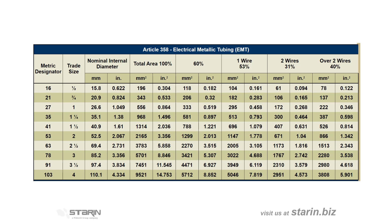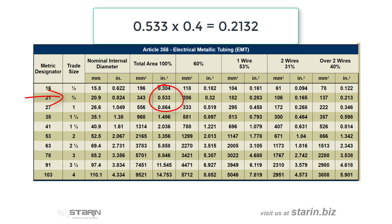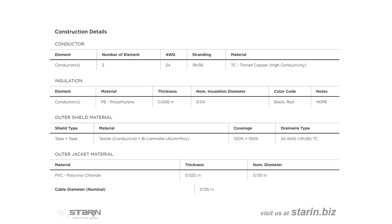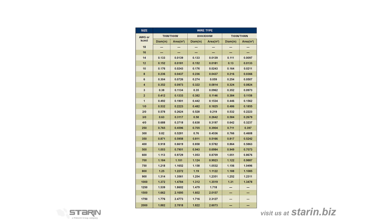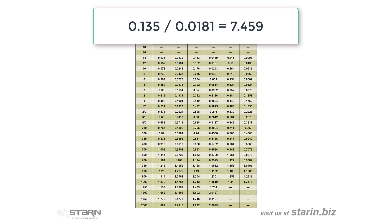Here's an example. In Table 4, we locate our ¾ inch EMT conduit. Under total area, we find 0.533 square inches. We multiply that number by 0.4 and get 0.2132 inches of permissible fill. We're using a two-conductor shielded cable with a diameter of 0.135 inches. On Table 5, we look for a similar diameter — in this case, we'll select the one greater than our actual size. The area is 0.0181 square inches. Dividing 0.2132 by 0.0181 comes out to 7.459. Rounding down, we know that we can fit 7 of these cables in the ¾ inch conduit.